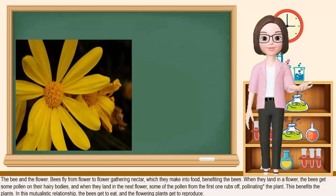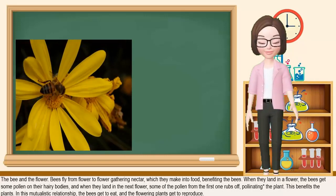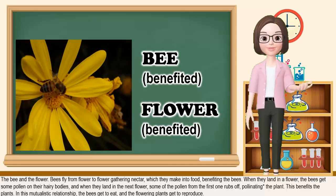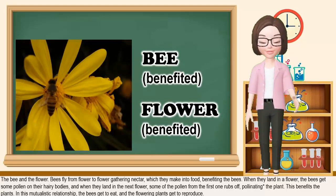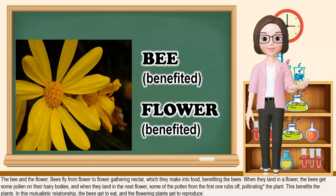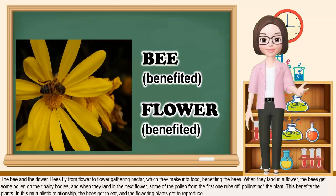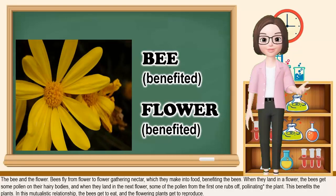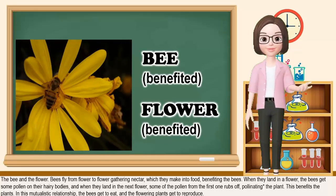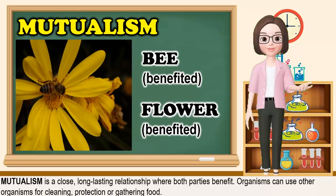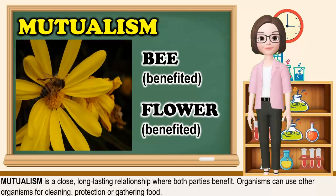Take a look at this video. What organisms can you see? Very good! A bee and a flower. Bees fly from flower to flower gathering nectar, which they make into food, benefiting the bees. When they land on a flower, the bees get some pollen on their hairy bodies. And when they land on the next flower, some of the pollen from the first one rubs off, pollinating the plant. This benefits the plants. In this mutualistic relationship, the bees get to eat and the flower plants get to reproduce. Mutualism is a close, long-lasting relationship where both parties benefit. Organisms can use other organisms for cleaning, protection, or gathering food.